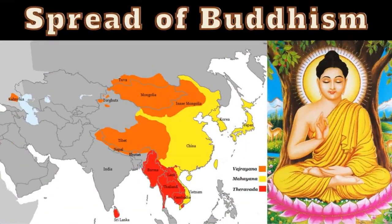Buddhism did spread. They think it started in the northern part of India and maybe Nepal, then went up into Tibet and China, Mongolia, Southeast Asia — Burma, Laos, Thailand, Cambodia, Vietnam, Korea, Japan, and Taiwan. You end up with three different types of Buddhism: Vajrayana Buddhism — mostly Tibetan Buddhism, associated with the Dalai Lama; Mahayana Buddhism — more popular in East Asia like China, Korea, and Japan; and Theravada Buddhism, popular in Southeast Asia.